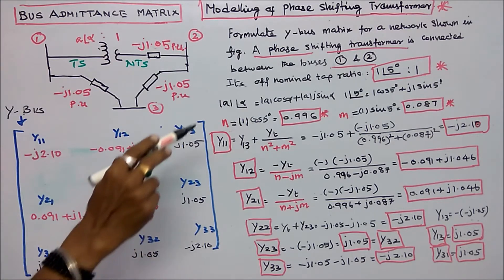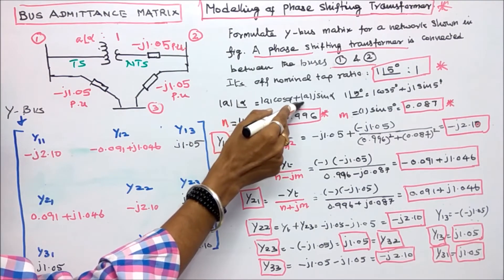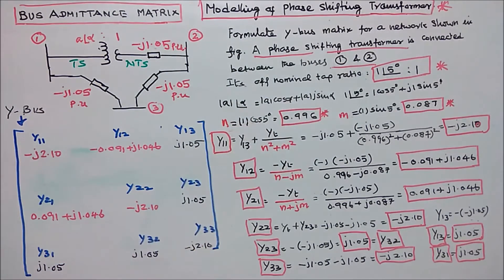We know that modulus of a into alpha is equal to modulus of a into cos alpha plus j modulus of a into sin alpha. Here a is equal to 1, alpha is equal to 5 degrees.